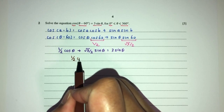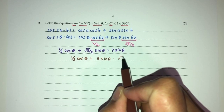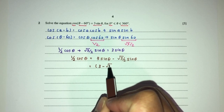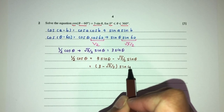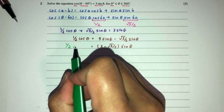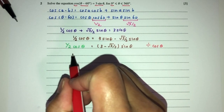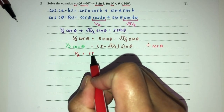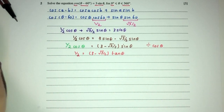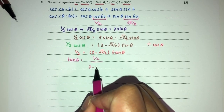Send the sine terms to one side. We have (1/2)cosθ = 3sinθ − (√3/2)sinθ. Factorizing gives (1/2)cosθ = (3 − √3/2)sinθ. Since we have cosθ on one side and sinθ on the other, we divide through by cosθ. That gives 1/2 = (3 − √3/2) tanθ. So tanθ = (1/2) divided by (3 − √3/2).